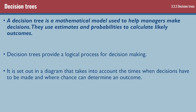A decision tree is a mathematical model used to help managers make decisions. It's all about using estimates and probabilities to calculate likely outcomes. It's a logical process set out in a diagram that takes into account any point where a decision has to be made and where chance can determine the outcome. If it's successful it might return this amount of money; if not successful, this amount - maybe one is a profit, maybe one is a loss.